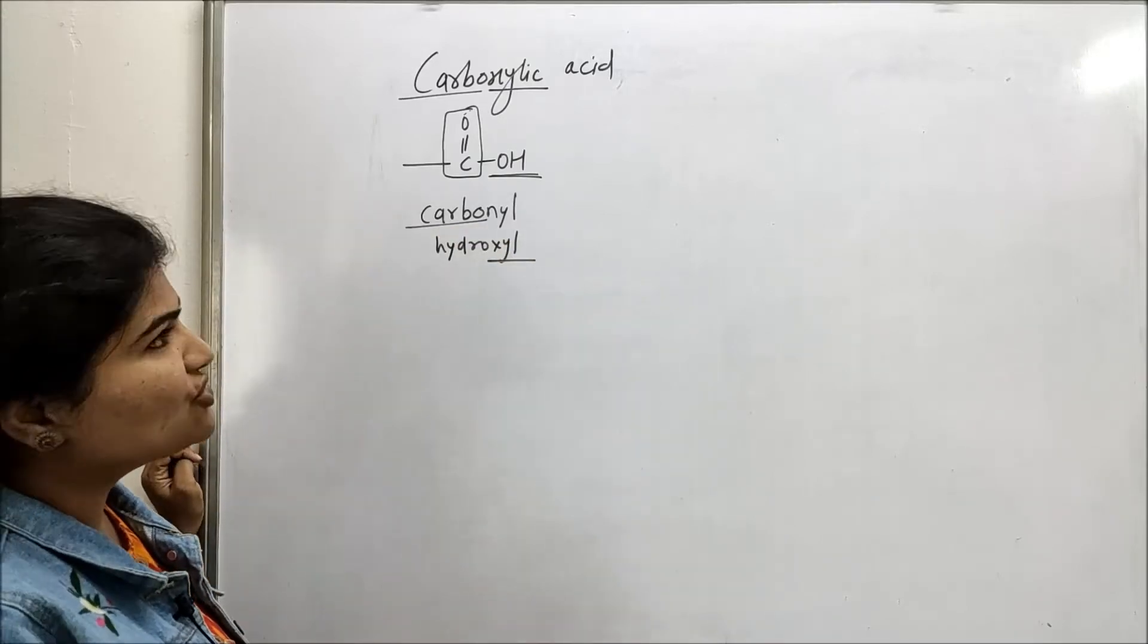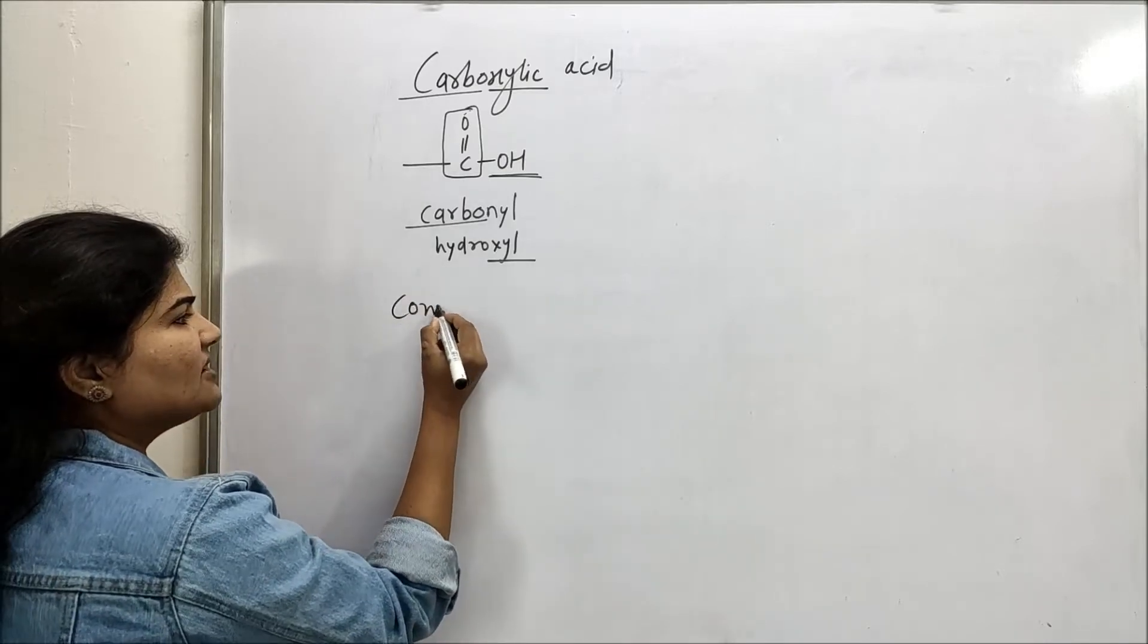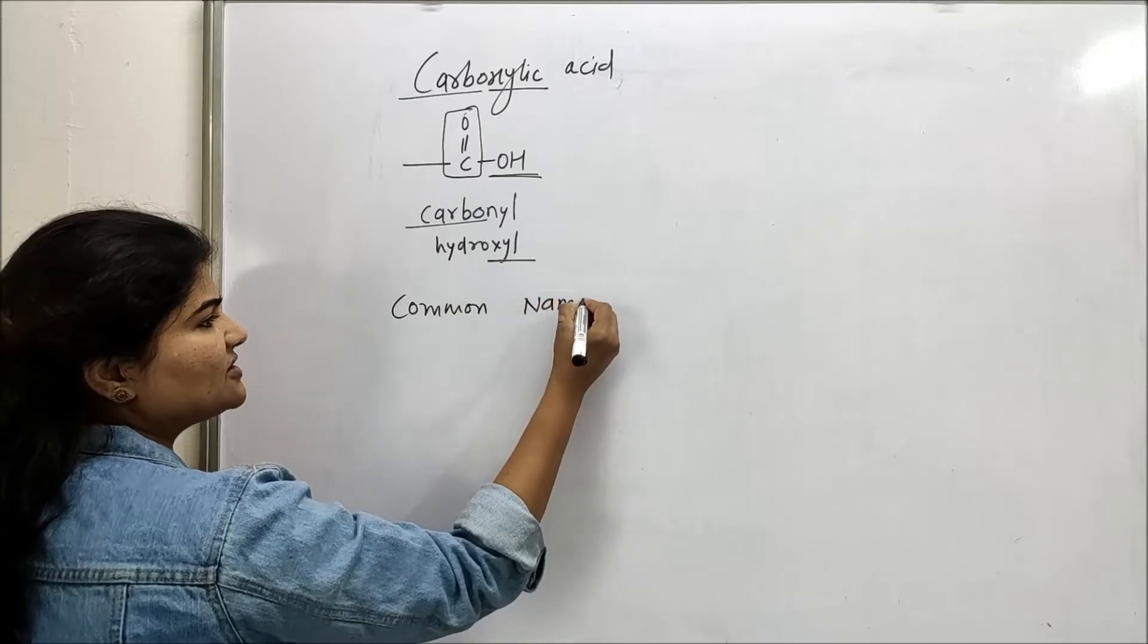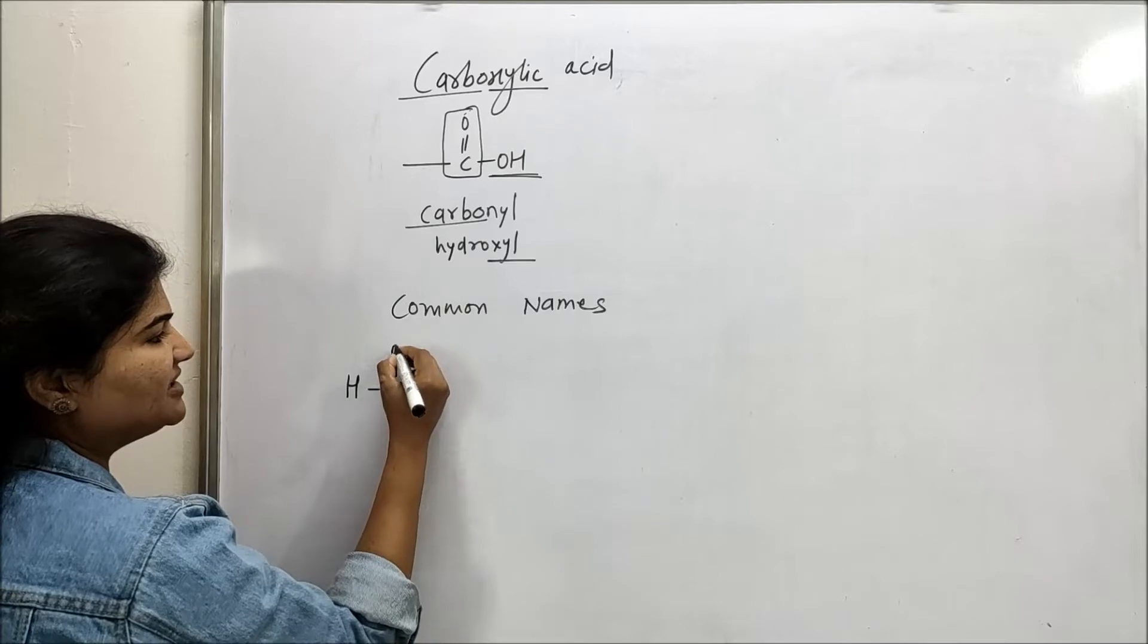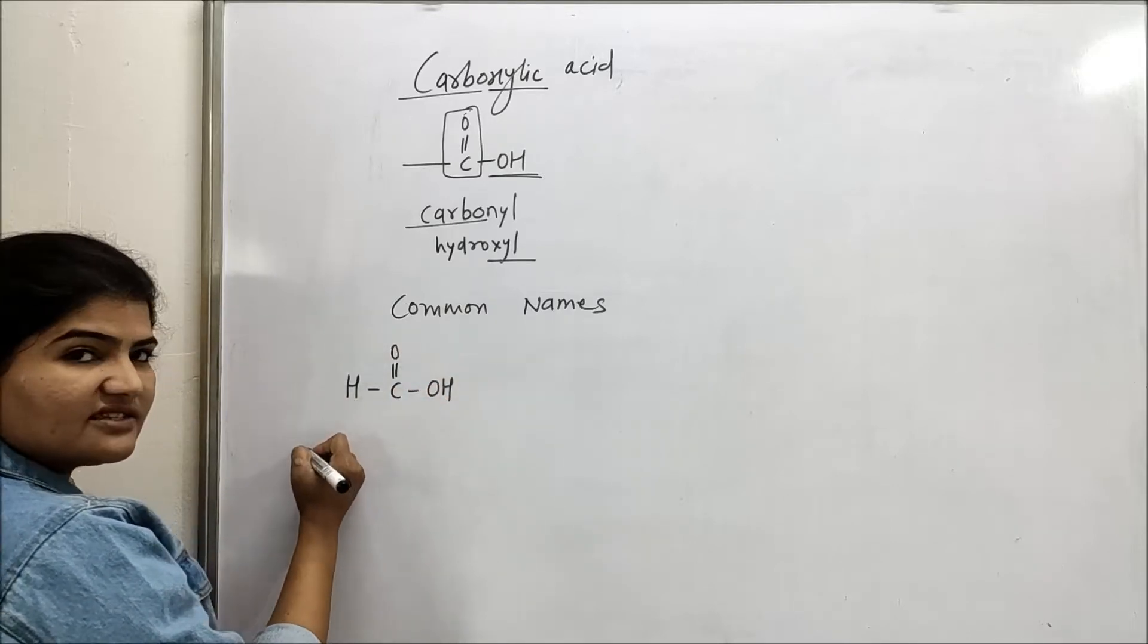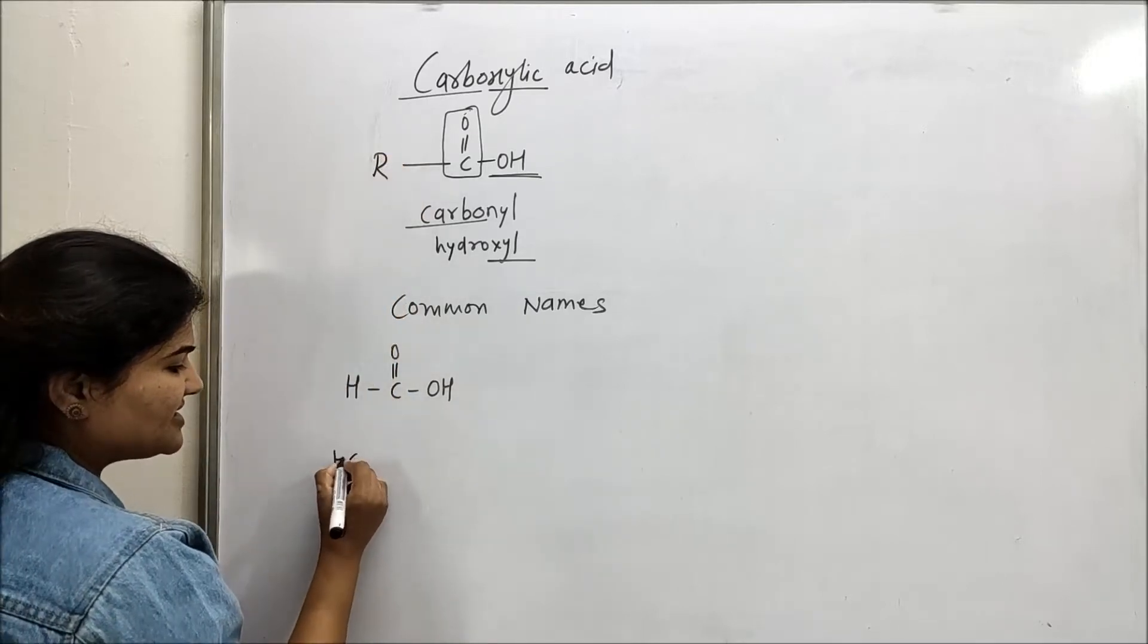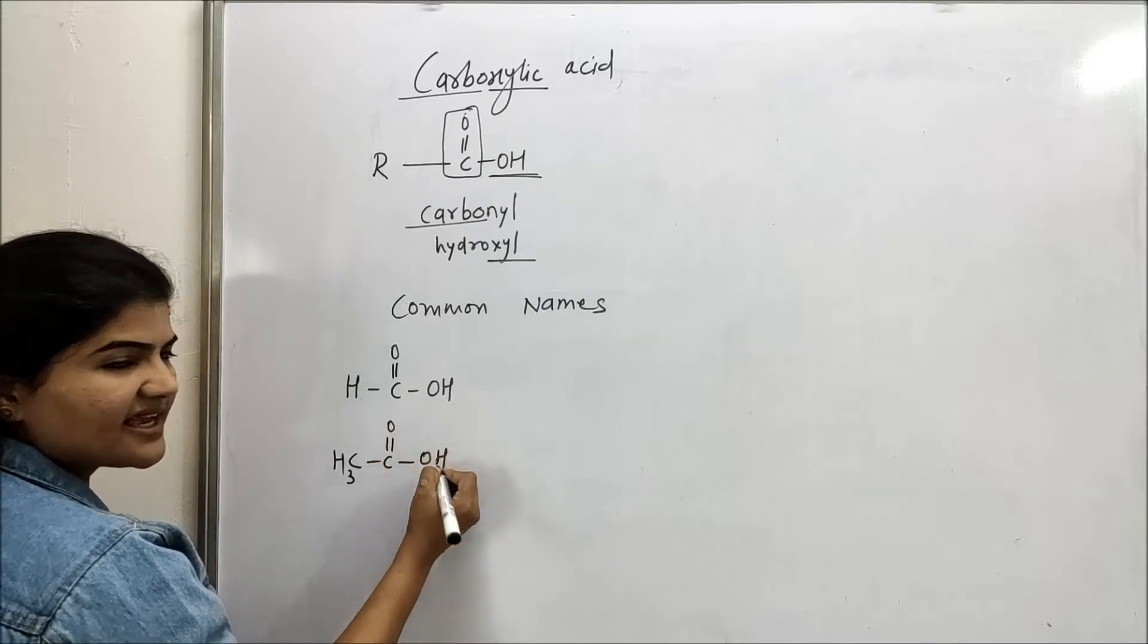Now for nomenclature of carboxylic acids in a common system, there are some names in common system. I will tell you the first member of carboxylic acid family is HCOOH where hydrogen is there instead of alkyl group. Then we will have CH3COOH, second member.